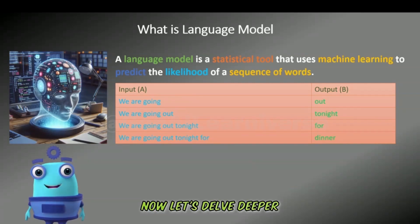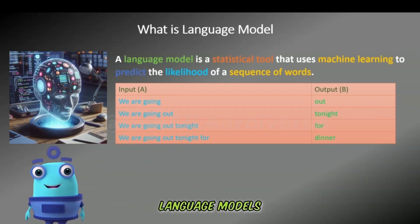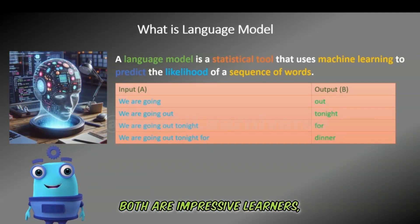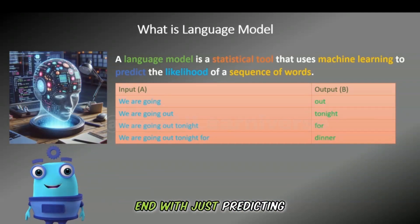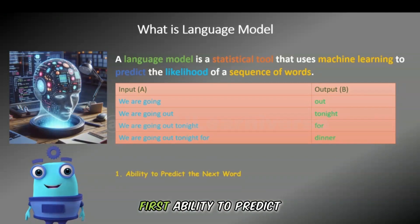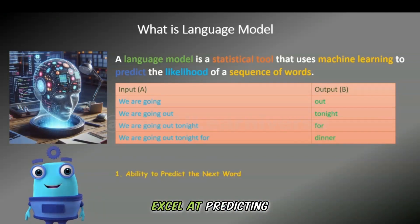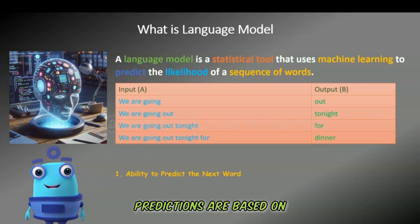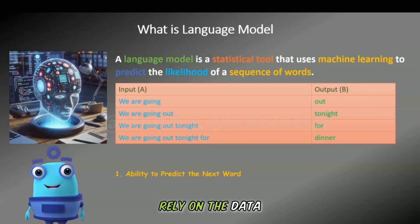Now, let's delve deeper into the similarities between our friend Blue and language models. Both are impressive learners, but their journey doesn't end with just predicting words. First, ability to predict the next word: both Blue and language models excel at predicting the next word. Blue's predictions are based on the conversations he's heard, while LLMs rely on the data they've been trained on.